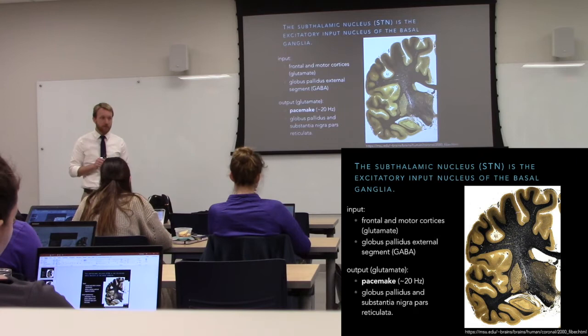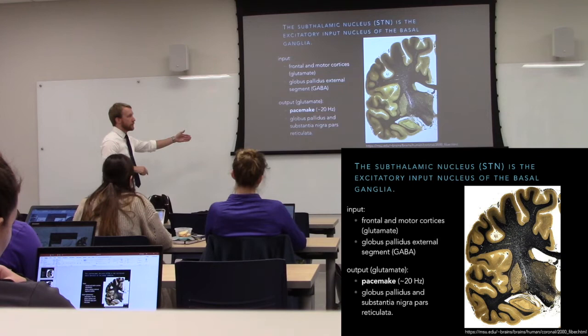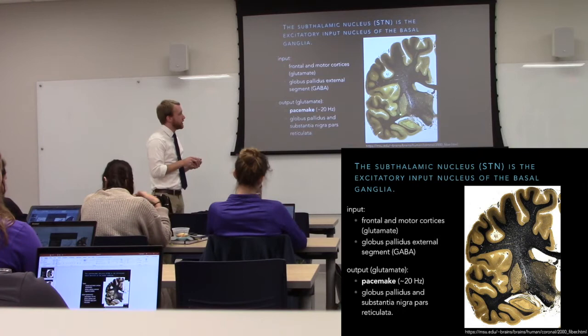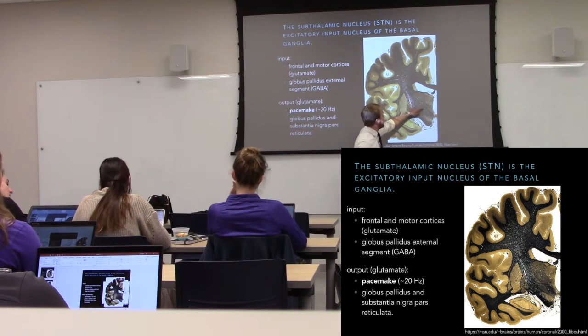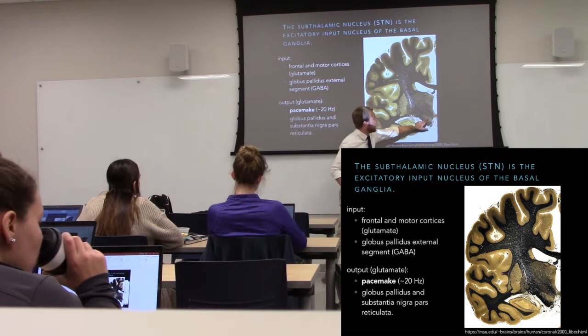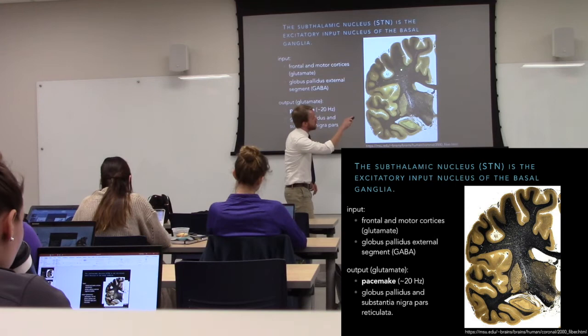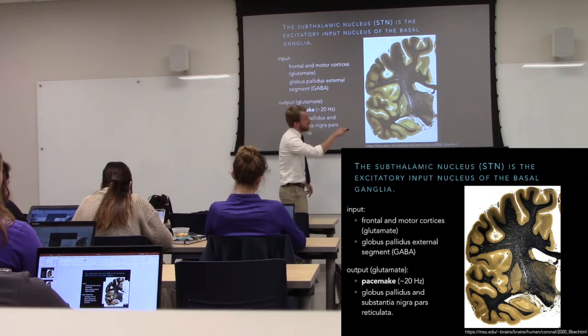The other input nucleus from the cortex is the subthalamic nucleus — it's just below the thalamus. So we've just taken a step back with our coronal slices. Here's our putamen, here's the caudate, and here's our striatum. The thalamic complex is here, and just below it you can see the subthalamic nucleus much better on your slides. The lightest structure is the substantia nigra, and just above that we have our subthalamic nucleus. Those axons from the cortex run down and provide input to the subthalamic nucleus as well as the striatum.